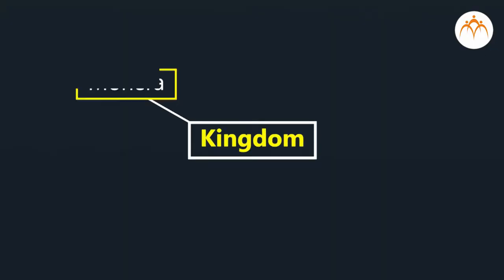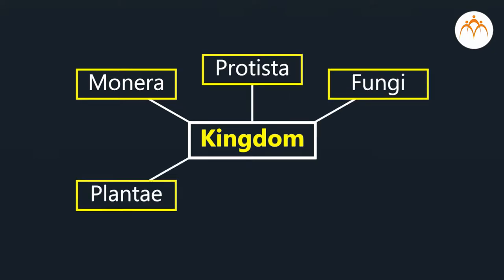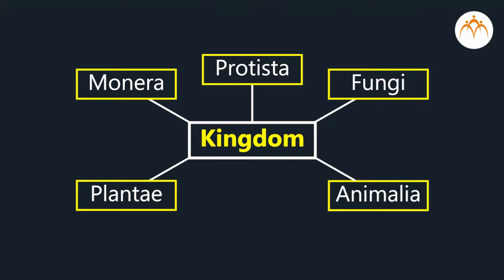In the year 1969, an American ecologist Robert Harding Whitaker proposed his classification system. In this system, there are five major groups or kingdoms, namely Kingdom Monera, Kingdom Protista, Kingdom Fungi, Kingdom Plantae and Kingdom Animalia. Before we study these groups, let's know the basis of classification used by Whitaker.